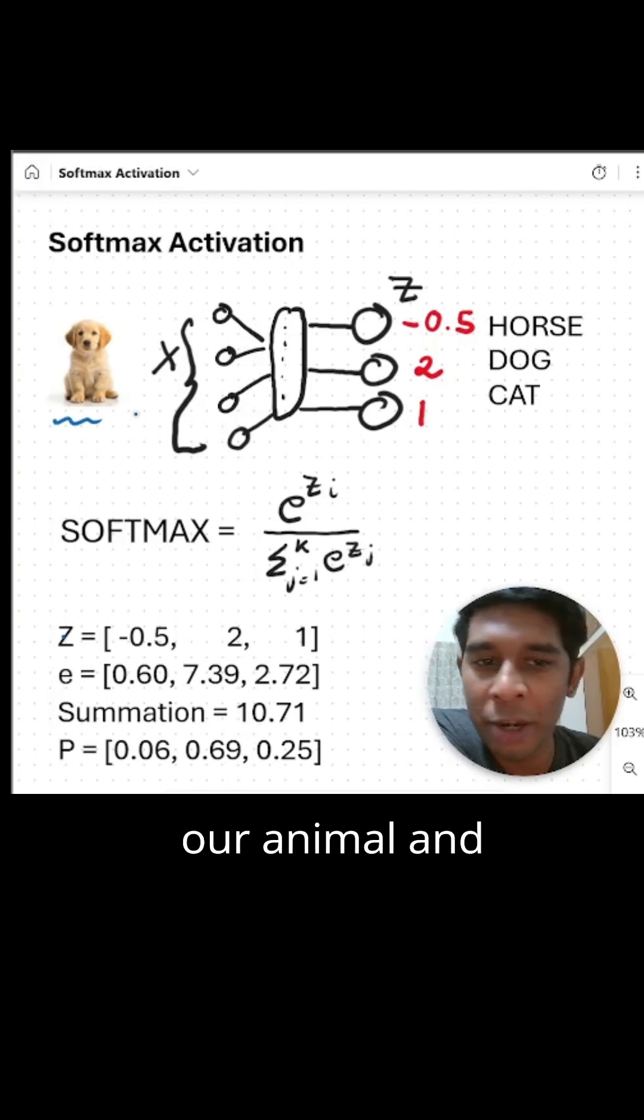Here we have an image of our animal and our multi-class classification network is trying to classify it as a horse, a dog, or a cat. And the Z values are my real valued outputs in the final layer.